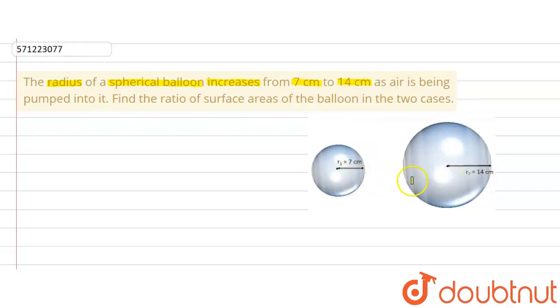A spherical balloon is something like this and its radius is increasing from 7 to 14 cm when the air is being inflated or pumped into it. Now we are asked to find the ratio of surface areas of the balloon in two cases.